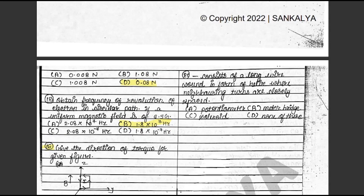Question 20: Dash consists of a long wire wound in the form of a helix where neighboring turns are closely spaced. The answer is C: Solenoid. This is on textbook page 131.